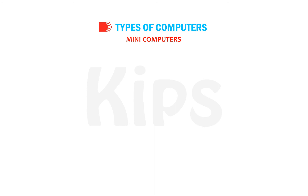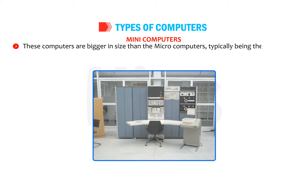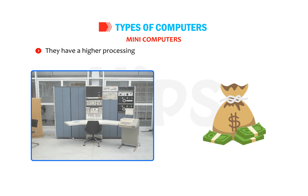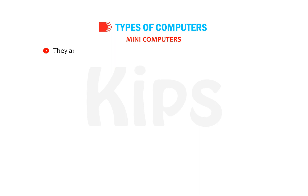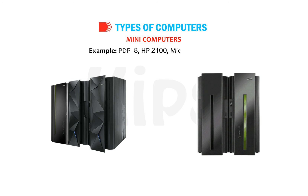Mini Computers: these computers are bigger in size than microcomputers, typically the same size as a refrigerator. They have a higher processing speed and are costlier than microcomputers. These computers are capable of supporting about 4 to 200 users simultaneously. They are used in banks, universities and other big organizations. Examples include PDP-8, HP-2100 and micro-VAX-3100.